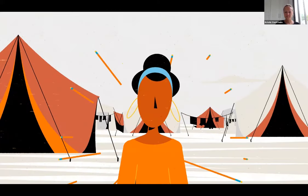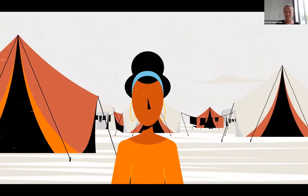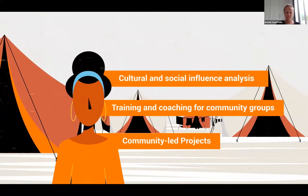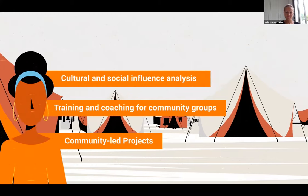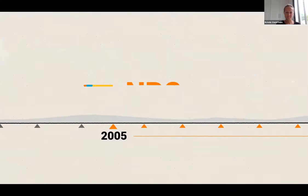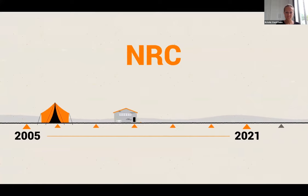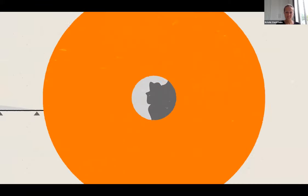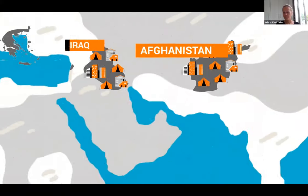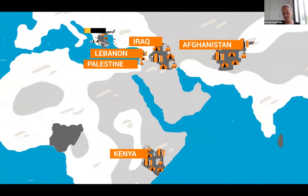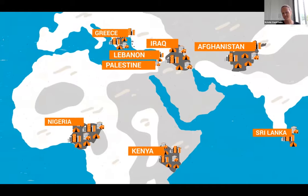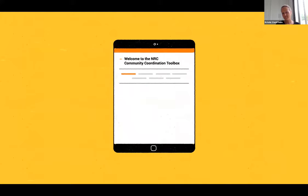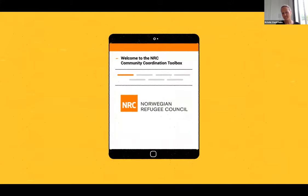In my work, I have found the NRC Community Coordination Toolbox very useful — practical guidance for different modalities and activities to engage with communities in different phases of the response. The toolbox is a consolidation of tools developed by NRC practitioners over the years in camps, formal sites, and urban neighborhoods. It is the result of efforts of NRC teams and displaced community members in Afghanistan, Iraq, Kenya, Lebanon, Palestine, Greece, and Nigeria. Today, all this know-how can be found in one place.